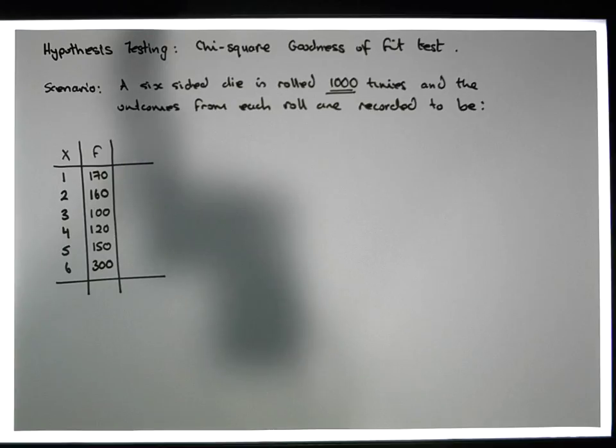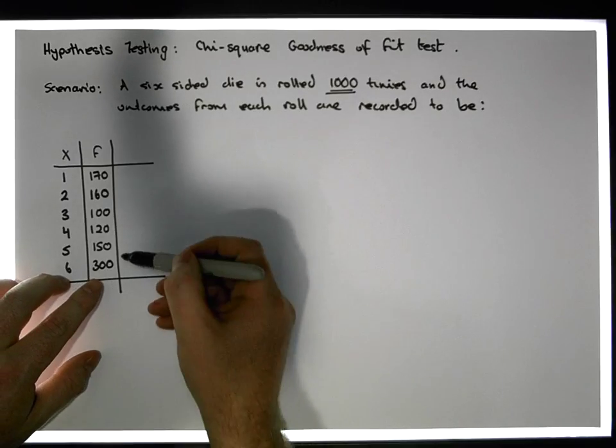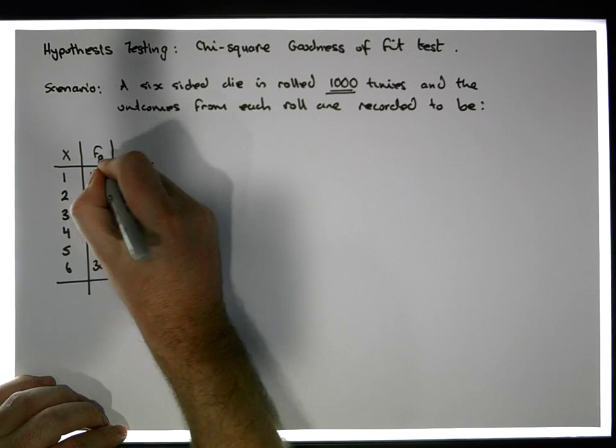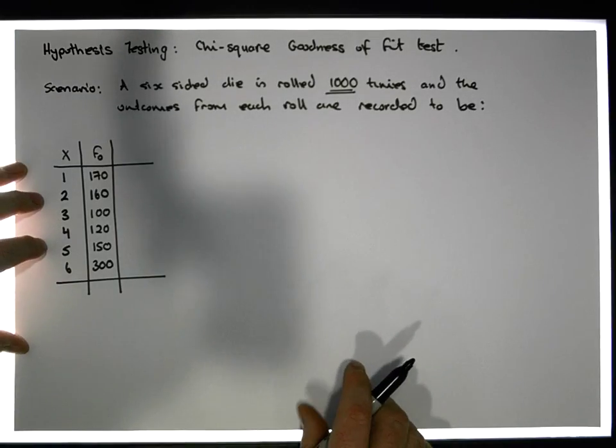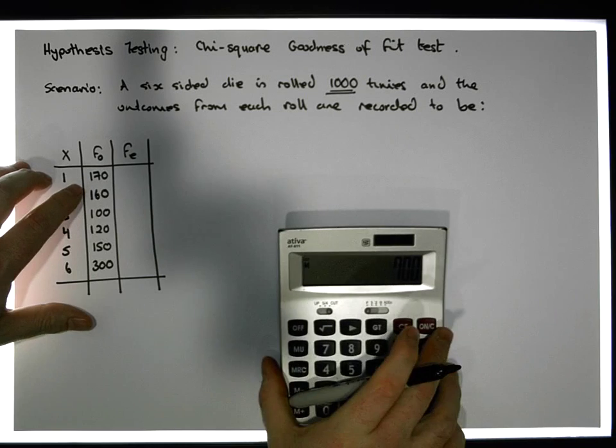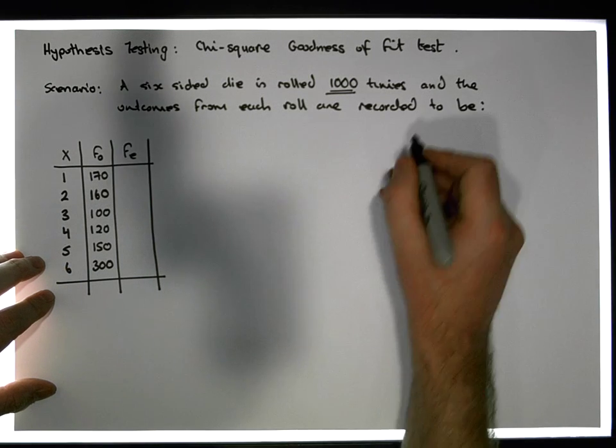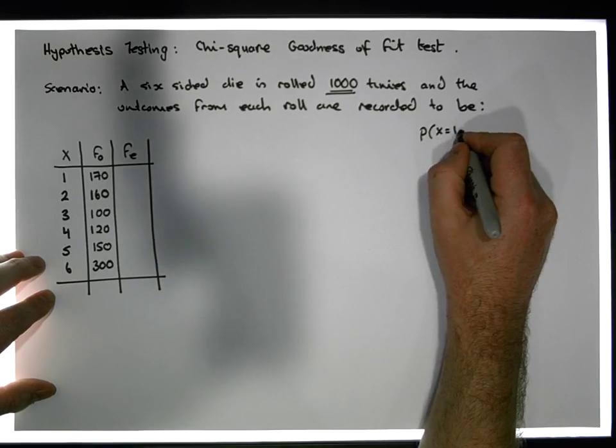We can see that the 6 seems to be occurring considerably more times than any other number on this particular die. The question is whether this die is fair or not. If it was a fair die, we'd expect the outcomes would follow a well-defined distribution. For a fair die, the probability of a 1 should equal 1 over 6, the probability of getting a 2 should equal 1 over 6, and all the way down - the probability of getting a 6 should also equal 1 over 6.